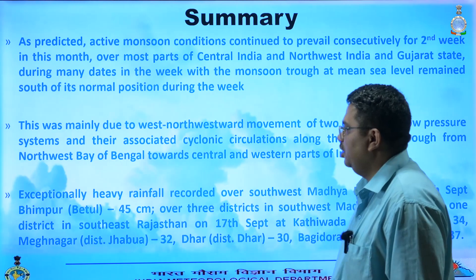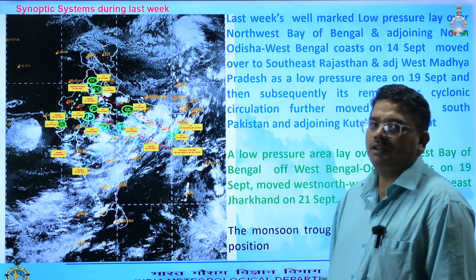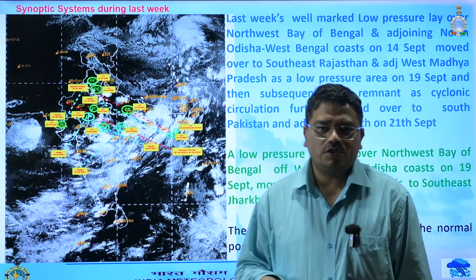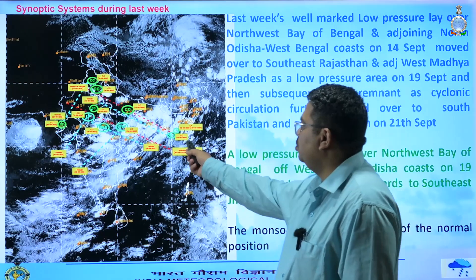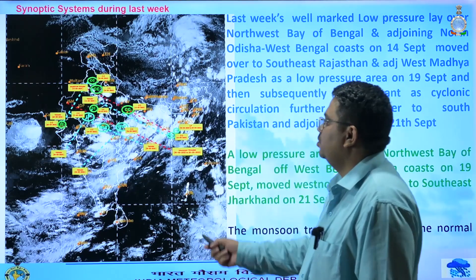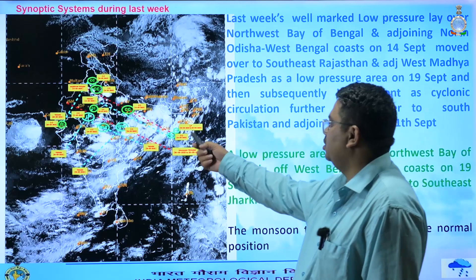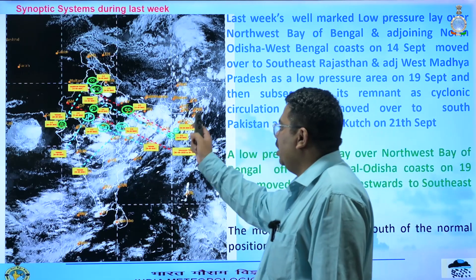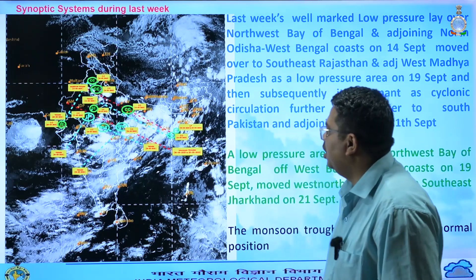Accordingly, we have mentioned three highlights. Now let us review the past week's synoptic systems. You can see that there are many small troughs and low pressure areas. But mainly, there were two low pressure areas.